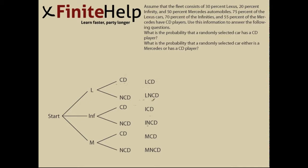Over here to the far right, these are all the outcomes of the experiment. You can have a Lexus with a CD (LCD), Lexus with no CD (LNCD), and so on for the other two types of cars.